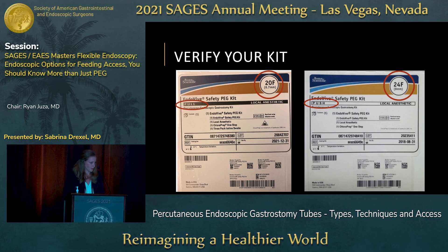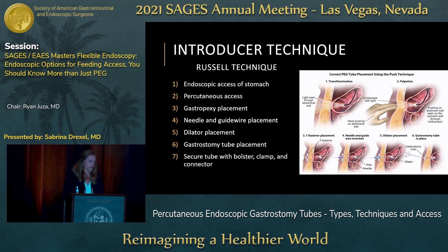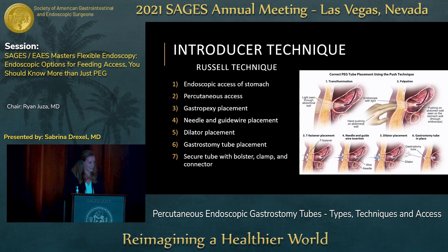The third technique is the introducer technique, also known as the Russell technique. Instead of pulling the tube from the mouth out through the abdominal wall, you directly access the stomach from the abdominal wall. After you obtain endoscopic access and confirm percutaneous access, you typically place some type of gastropexy to prevent the stomach from moving away from the abdominal wall during dilation. After the gastropexy, you use a needle and guidewire to access the stomach, perform dilation up to the desired size, and then place your gastrostomy tube through a peel-away sheath.